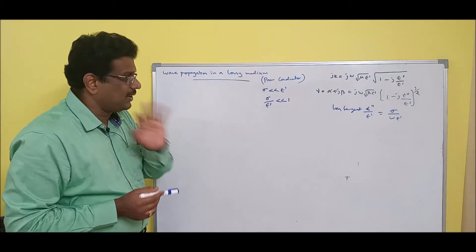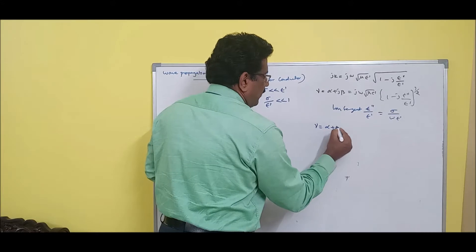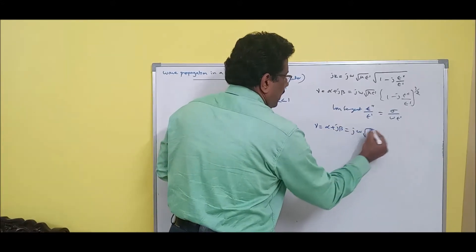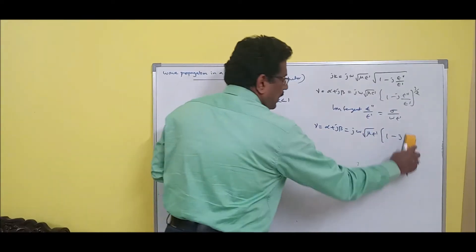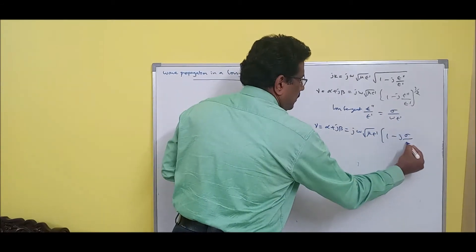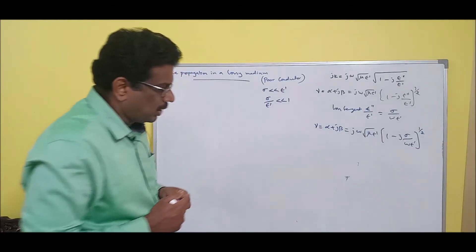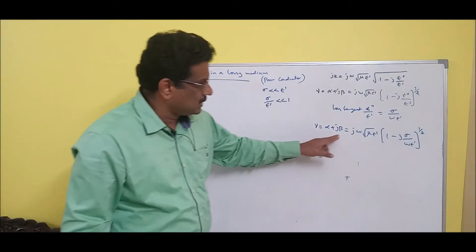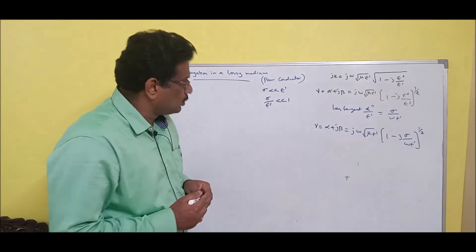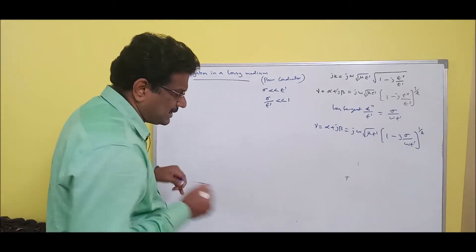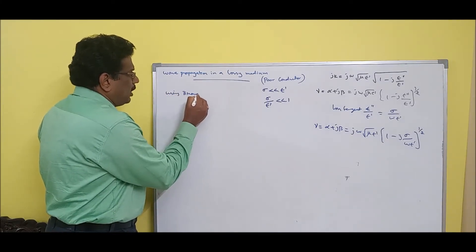Now with this substitution, gamma equals alpha plus j*beta equals j*omega into root of mu*epsilon-dash into 1 minus j, where instead of epsilon double-dash, the loss tangent is modified as sigma divided by omega*epsilon-dash, all to the power of half. Since this term is much less than one, we can expand it as a binomial expansion.